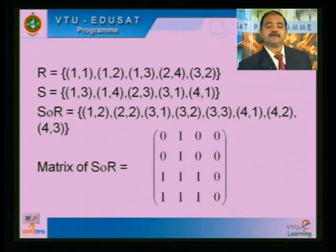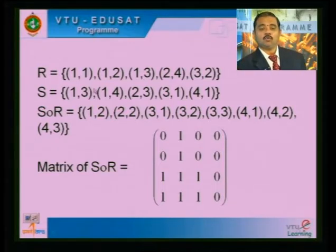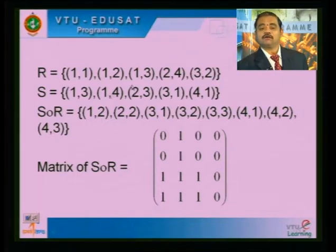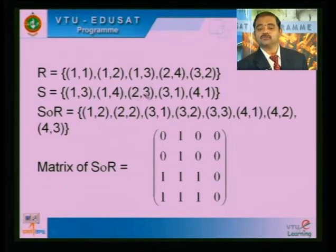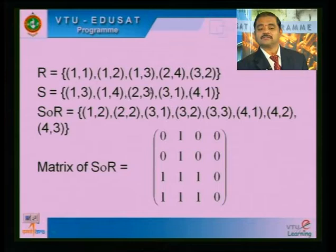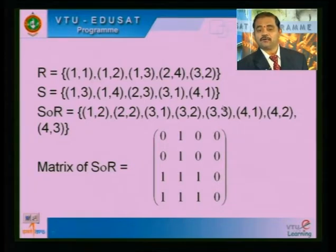For S composite R, going the opposite direction: (1,3) and (3,2) gives (1,2). (2,3) and (3,2) gives (2,2). (3,1) and (1,1) gives (3,1). (3,1) and (1,2) gives (3,2). (3,1) and (1,3) gives (3,3). (4,1) and (1,1) gives (4,1). (4,1) and (1,2) gives (4,2). Similarly (4,3). We have written the resulting matrix.